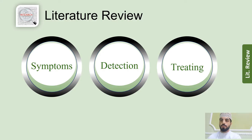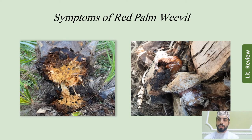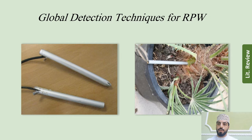In this chapter we will talk about the symptoms of the red palm weevil, the global detection techniques for red palm weevil, and the traditional methods for treating infected palm trees. So how can we know if a palm tree is infected? We can observe it by the decreasing of palm productivity, and the palm begins to wilt and yellow. Also, by emitting an unpleasant smell due to larva waste. As we see in this figure, the black material is the larva waste, and the presence of holes on the palm trunk is a sign of the entry of the red palm weevil larva.